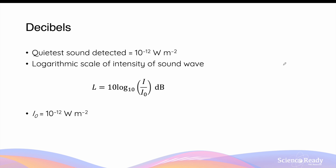When we talk about the volume of sound we often hear the word decibels. It is important to note that the quietest sound that can be detected by the average human ear has an intensity of 10 to the power of minus 12 watts per meter squared — remember this is one of the units for intensity of sound.